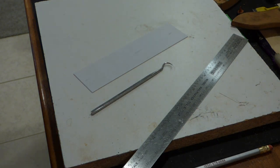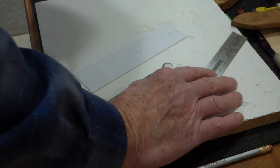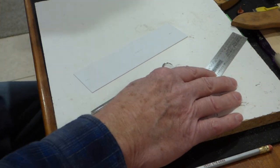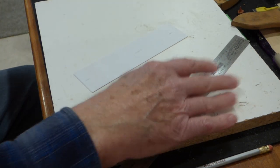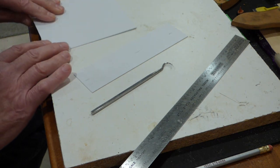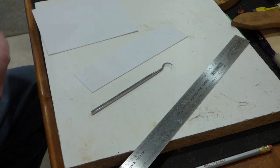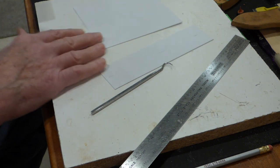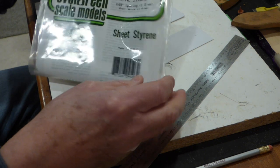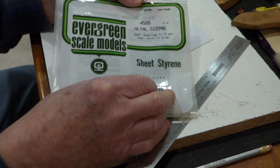Hello, it's Bruce here again. Today I'm going to talk about using sheet styrene metal siding to represent corrugated metal roofing or corrugated metal siding on a structure.